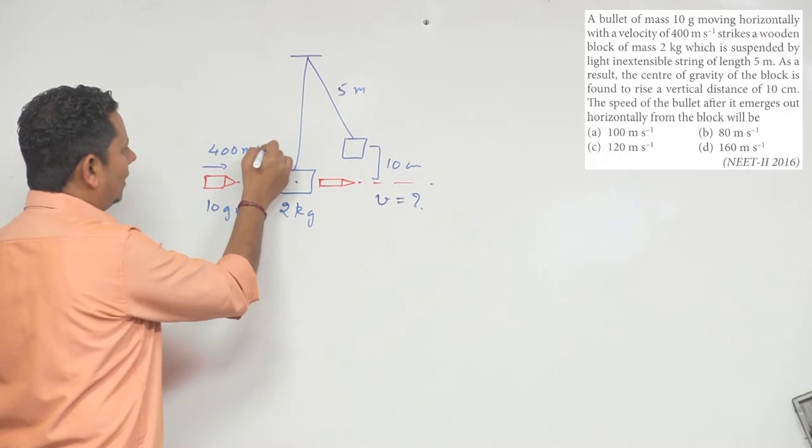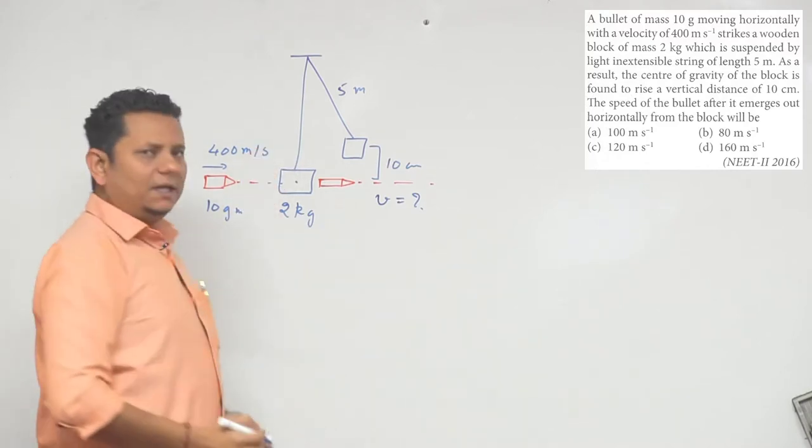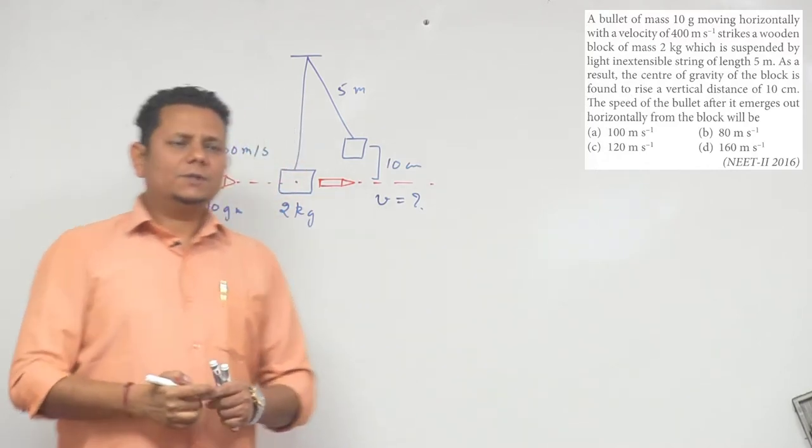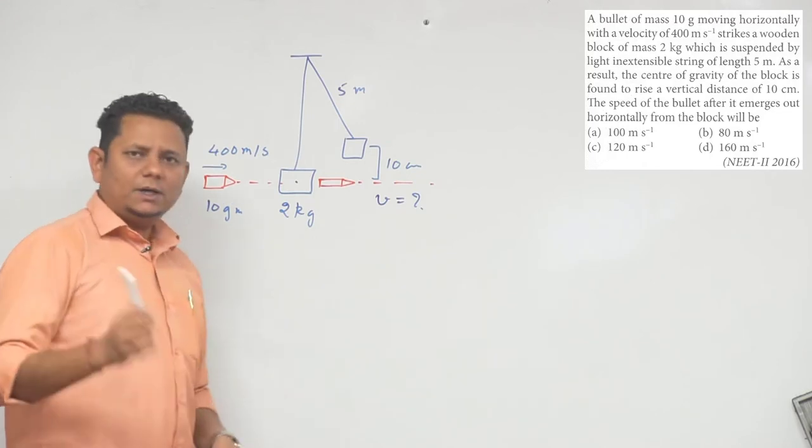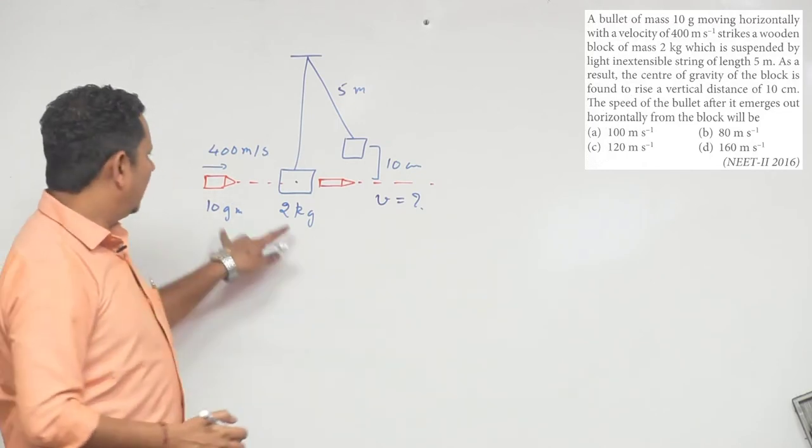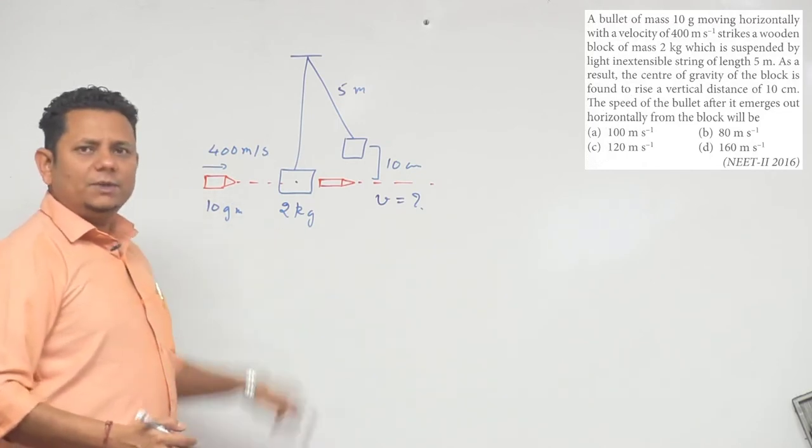when it strikes is 400 meters per second. We need to find the final velocity. First, let's apply the conservation of energy principle between the bullet and block.